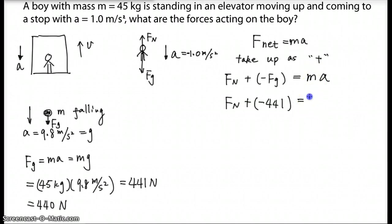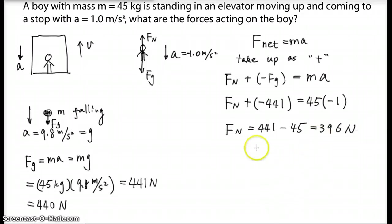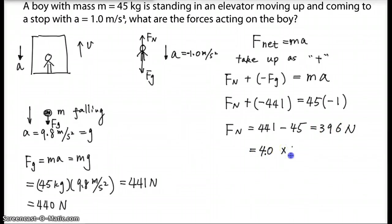With M equals 45 and A equals negative 1, solving the equation gives Fn equals 441 minus 45, which equals 396 newtons. Rounding to two significant digits gives 400 newtons — it's best to express this in scientific notation to make the significant digits clear. So the normal force is 4.0 × 10² newtons.